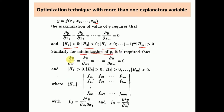Similarly, for minimization of the function y, it requires partial differentiation of y with respect to x1 equal to 0, partial differentiation of y with respect to x2 equal to 0, and partial differentiation of y with respect to xm equal to 0. The second order or sufficient condition for a minimization problem is that all Hessian determinants H1, H2, H3 must be positive — that is, all Hessian determinants must be positive.